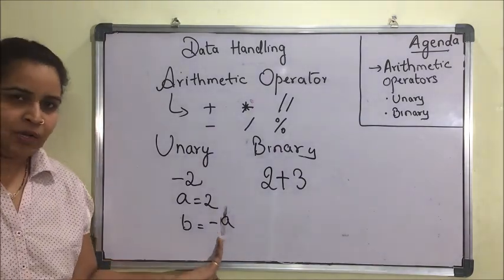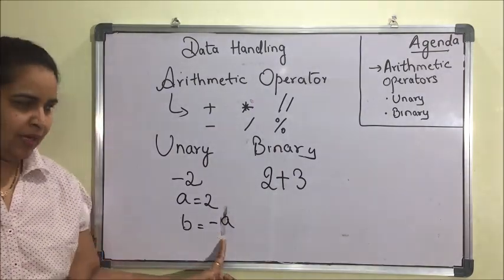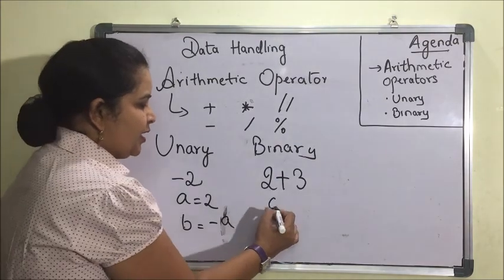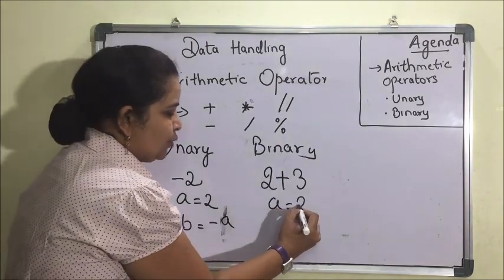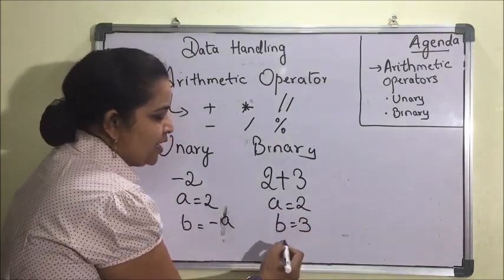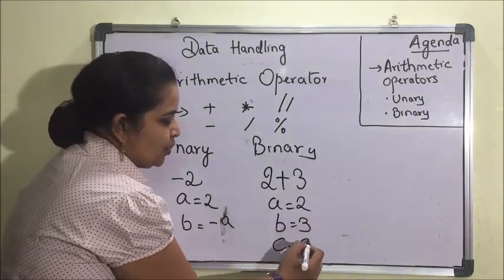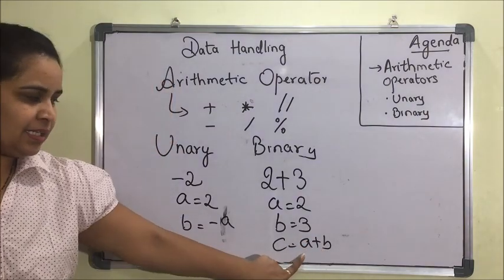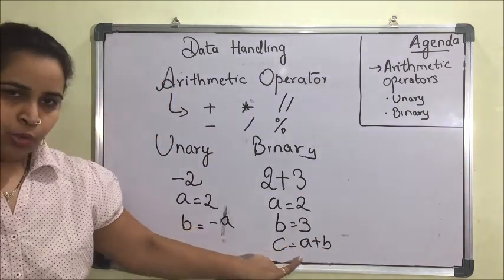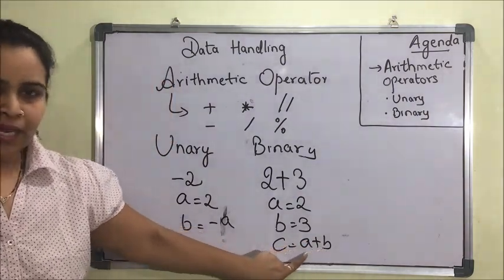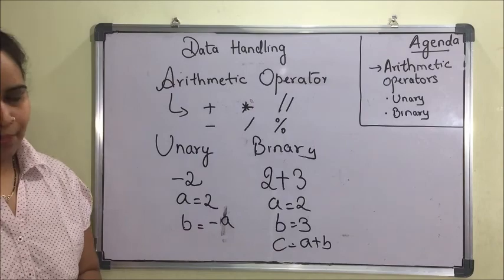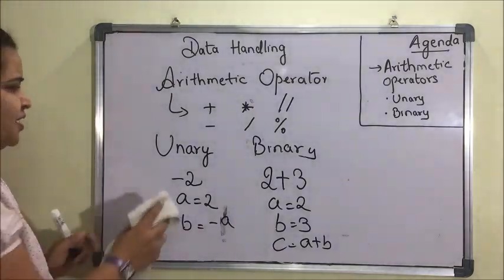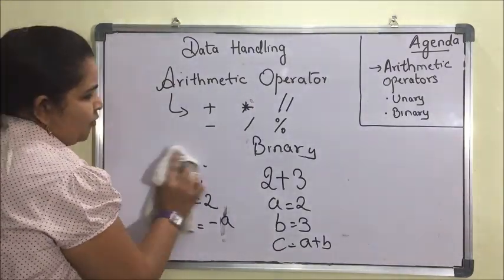In another case, if a = 2, b = 3, and c = a + b, as it needs two operands, this is known as a binary operator. Now I'll give an example of all the operators.